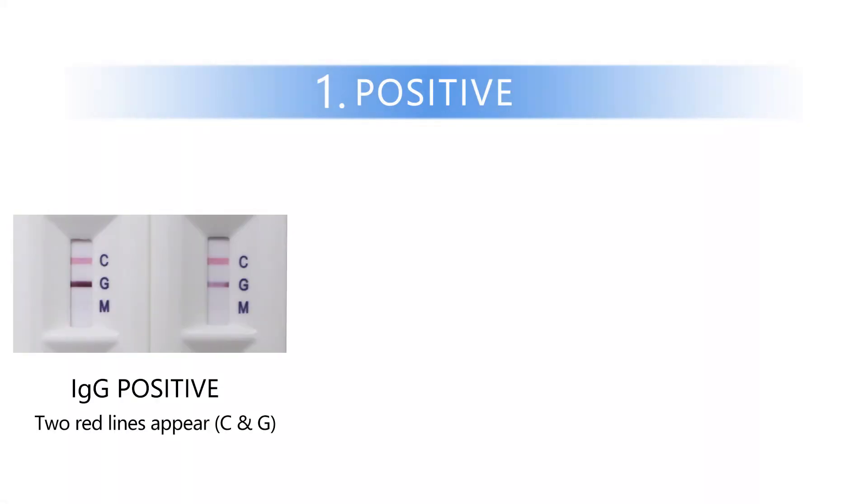IgG positive. Two red lines appear on both C and G regions.